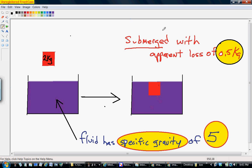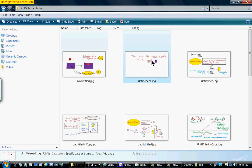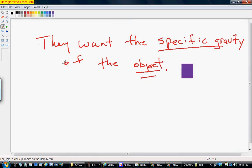After we've done this, we want to focus on what are we looking for. The question asks us, what is the specific gravity of the object? So we're looking for the specific gravity of that.